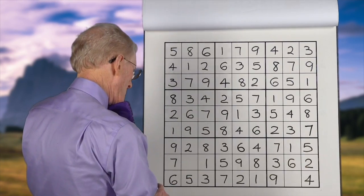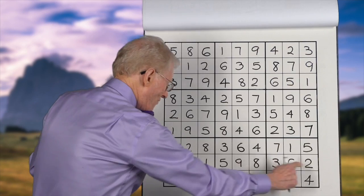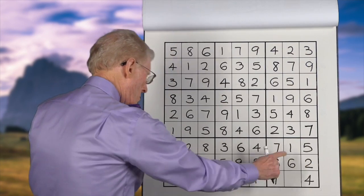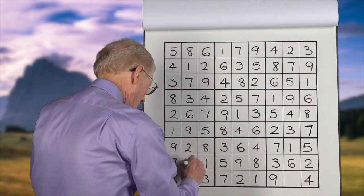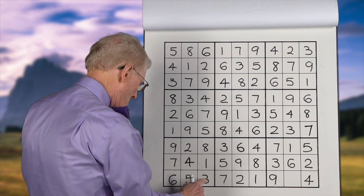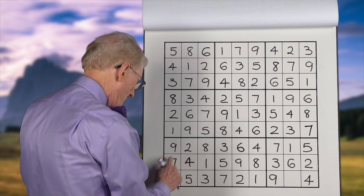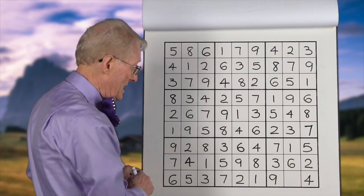Now we can do this row. 1, 2, 3, it's a 4. And we can double-check ourselves by going 1, 2, 3, 4, 5, 6, 7, 8, 9. And that block is correct.